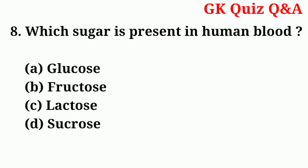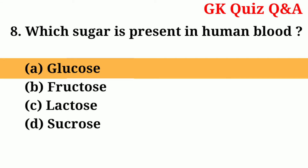Number eight: which sugar is present in human blood? Answer: number A — glucose.